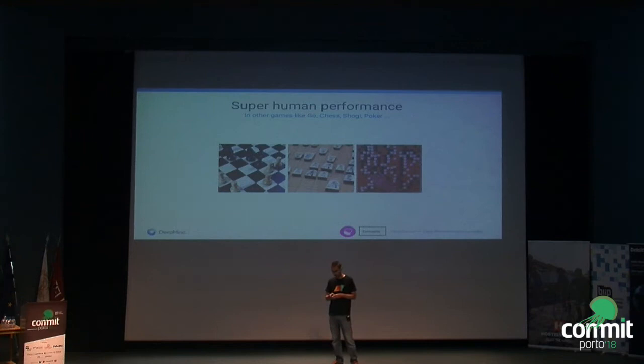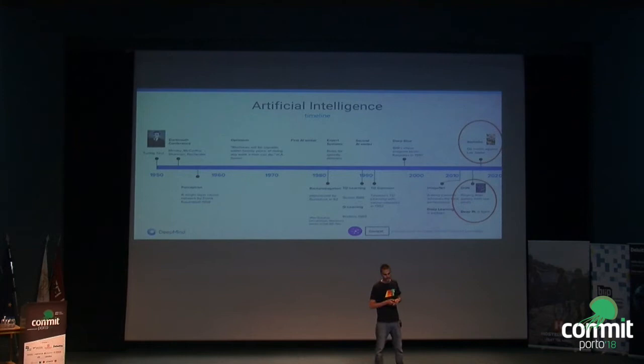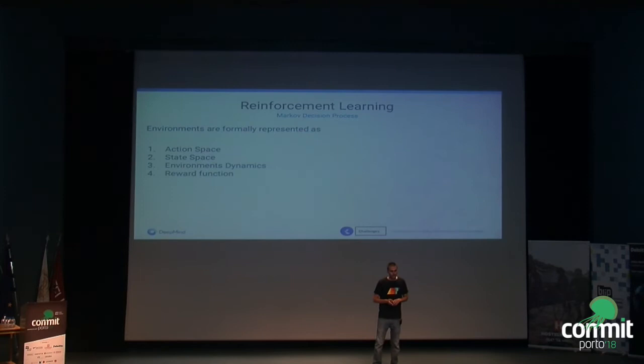You might be wondering: is artificial intelligence solved already? It looks like we are using old algorithms and just by scaling things, everything seems to be working well for different problems. I want to argue that this is not really the case, and I will explain this using the framework of reinforcement learning and highlighting why some challenges are still open.